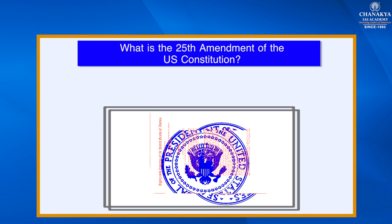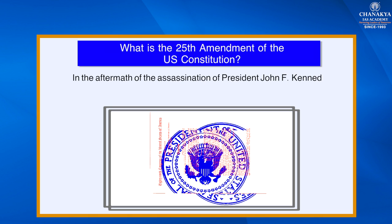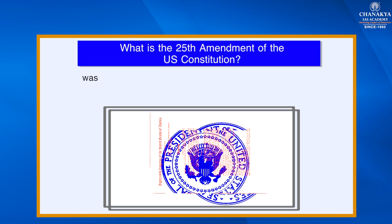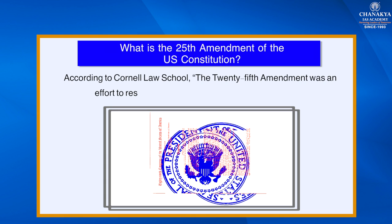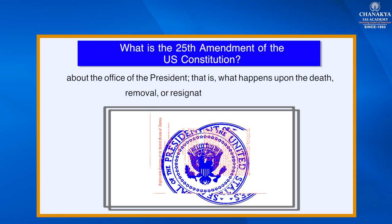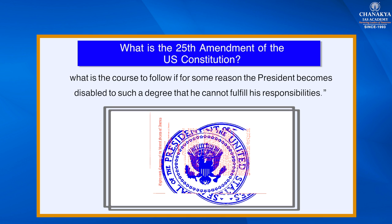The 25th Amendment of the U.S. Constitution lays out how a U.S. President and Vice President may be succeeded or replaced. In the aftermath of the assassination of President John F. Kennedy, the 25th Amendment was proposed by Congress on July 6, 1965, and ratified by the states on February 10, 1967. According to Cornell Law School, the 25th Amendment was an effort to resolve continuing issues revolving around the office of the President — that is, what happens upon the death, removal, or resignation of the President, and what is to follow if for some reason the President becomes disabled to such a degree that he cannot fulfill his responsibilities.